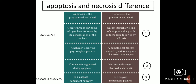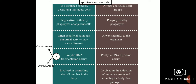Apoptosis is programmed cell death; necrosis is premature cell death. Apoptosis occurs through shrinkage of cytoplasm followed by nuclear condensation, while necrosis occurs through swelling of cytoplasm along with mitochondria, followed by cell lysis. Apoptosis is a naturally occurring physiological process, whereas necrosis is a pathological process caused by external agents like toxins or trauma. Chromatin is aggregated during apoptosis, but no structural chromatin changes occur in necrosis. Apoptosis is a caspase-dependent pathway; necrosis is caspase-independent.